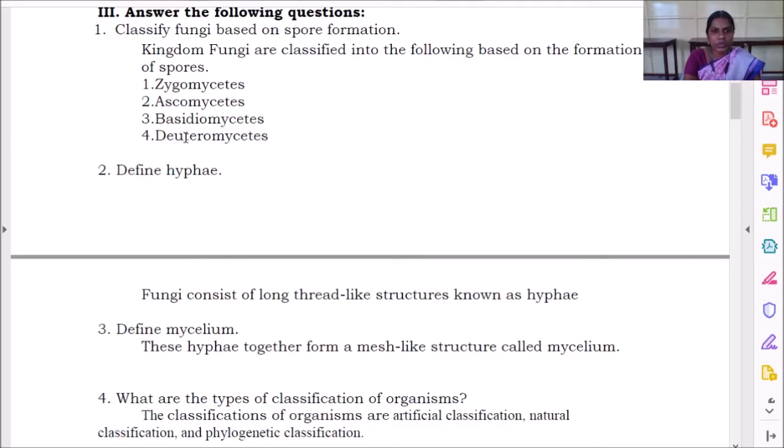And here we have deuteromycetes. D-E-U-T-E-R-O-M-Y-C-E-T-E-S, deuteromycetes. So what are the classifications for fungi based on spore formation? We have studied four classifications here: zygomycetes, ascomycetes, basidiomycetes, and deuteromycetes.